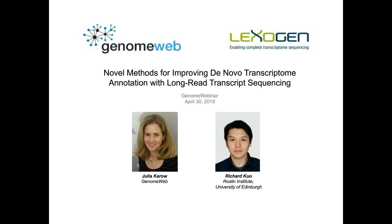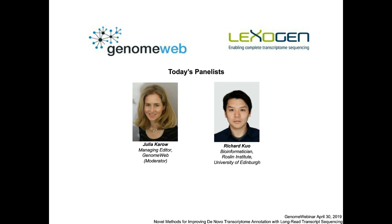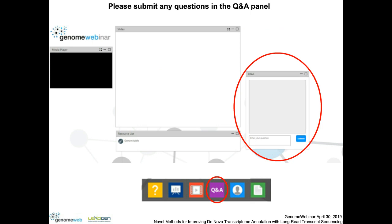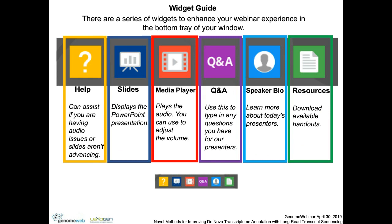Good morning or good afternoon everyone and welcome to Genome Webinars. I'm Julia Caro, managing editor of GenomeWeb, and I'll be your moderator today. The title of today's webinar is Novel Methods for Improving De Novo Transcriptome Annotation with Long Read Transcript Sequencing. This webinar is sponsored by Lexogen. Our speaker today is Richard Kuo, a bioinformatician at the Roslin Institute at the University of Edinburgh in Scotland. You may type in a question at any time through the Q&A panel on the right side. We will ask our speaker your questions after his presentation.